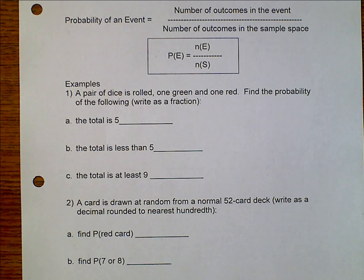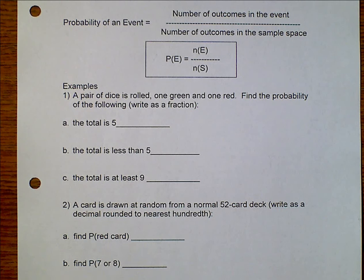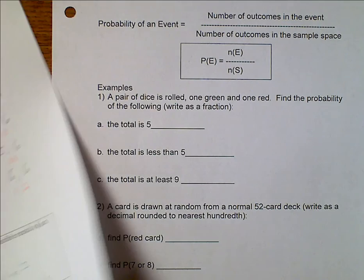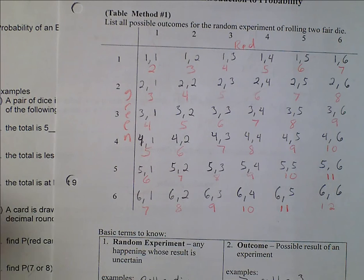We've got one more page of examples. The probability of an event is basically the number of outcomes of the event over the number of outcomes of the sample space. So if a pair of dice is rolled, one green and one red, find the probability of the following. We want to write these as a fraction. So we want to know the total is 5. Luckily we have already made a table. So which ones have a total of 5?